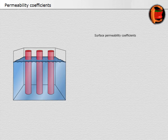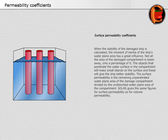Surface permeability coefficients: when the stability of the damaged ship is calculated, the moment of inertia of the ship's water plane area has a great influence. Not all the area of the damaged compartment is taken away — only a percentage of it. The objects that penetrate the water surface in the compartment will make small islands on the surface, and these will give the ship better stability. The surface permeability is the remaining unpenetrated water plane area of the damaged compartment divided by the undisturbed water plane area of the compartment. SOLAS gives the same figures for surface permeability as for volume permeability.